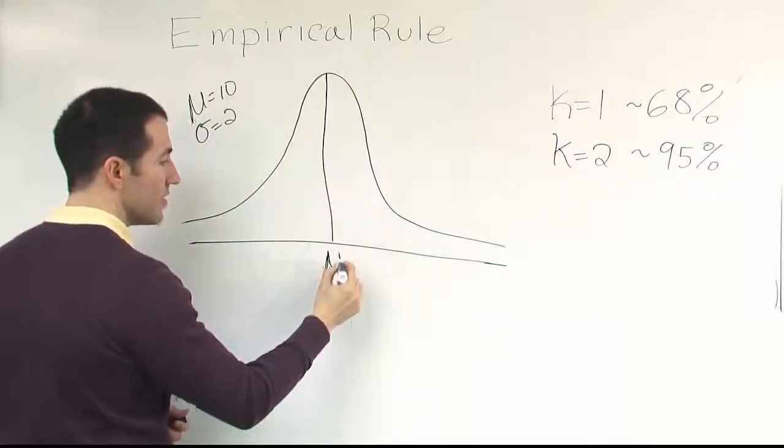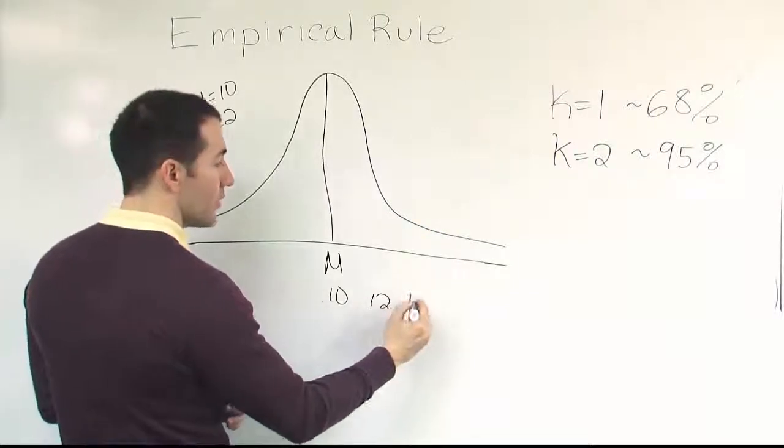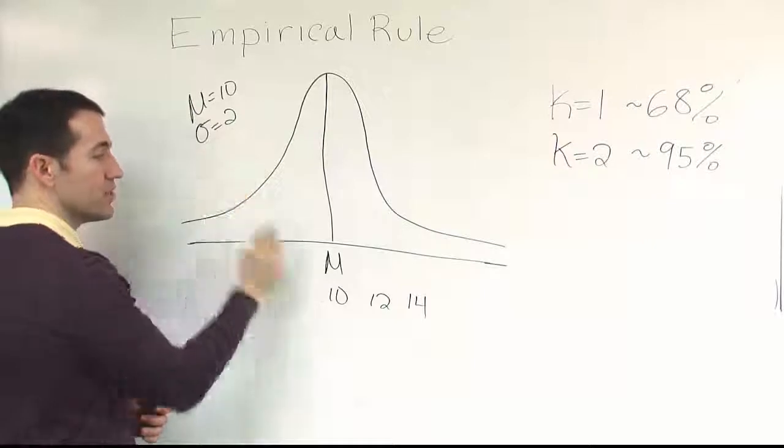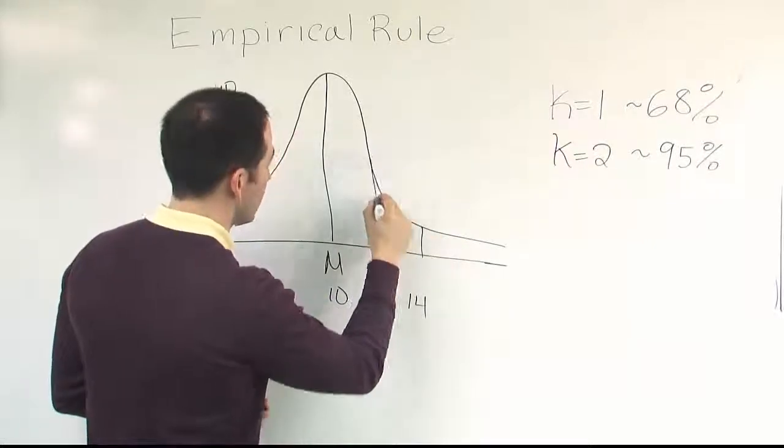So again, mean in the center, let's say that's 10. If you go out to 12 and then to 14, that's 2 standard deviations away from the mean because the standard deviation is 2.